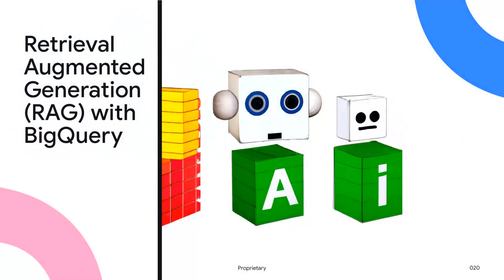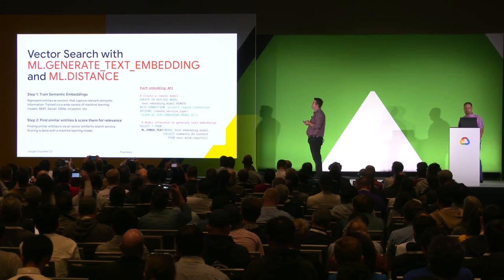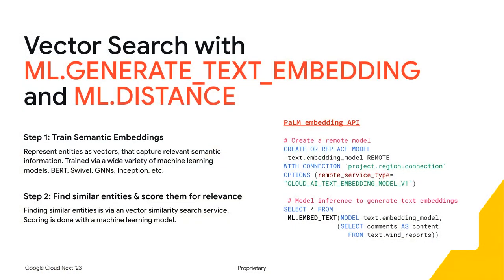Now that we've talked about how to call LLMs from SQL and use that with BigFrames, I want to give a quick example of how to take BigQuery data warehouse data and use it to put guardrails around that LLM. I'll do that with vector search using ML generate text embedding and ML distance. The first step is training the semantic embeddings: we take that Python data and transform it into numerical vectors, then find similar clusters of information within the vector space.